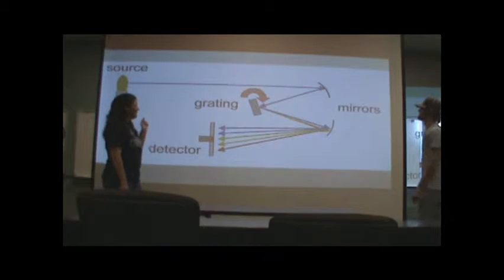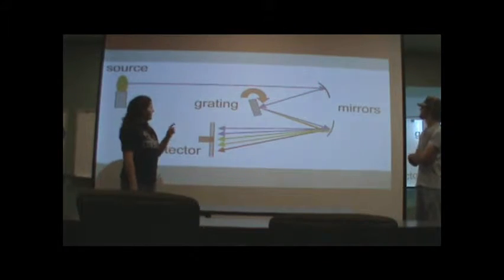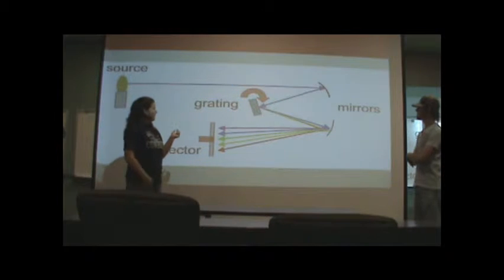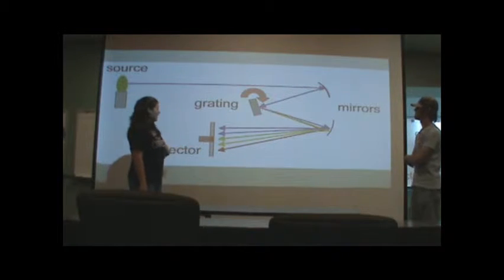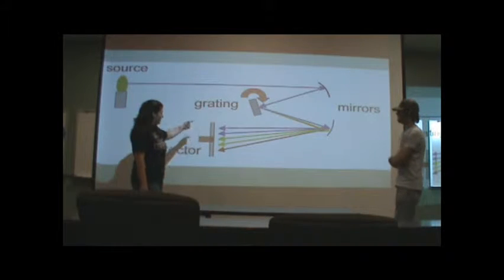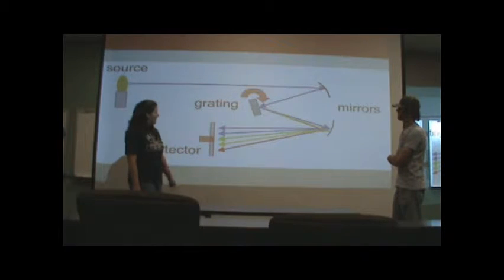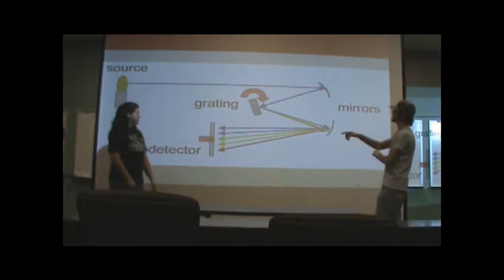The light source is passed through an entrance slit where it hits a concave mirror, and then that light is reflected onto the grating, which diffracts the light, and then it hits another concave mirror, and as it exits, it's even more diffracted, and so you can actually pass different wavelengths by adjusting the grating through the detector.